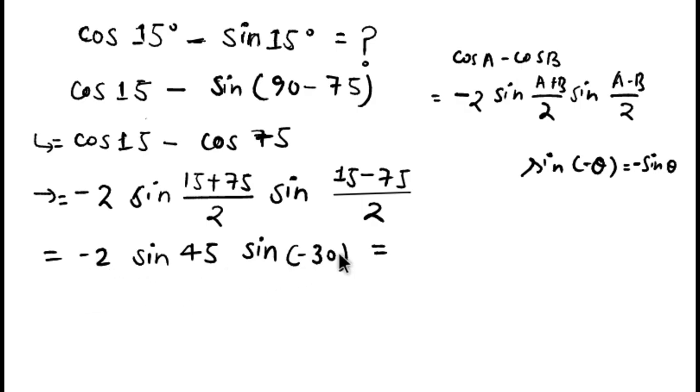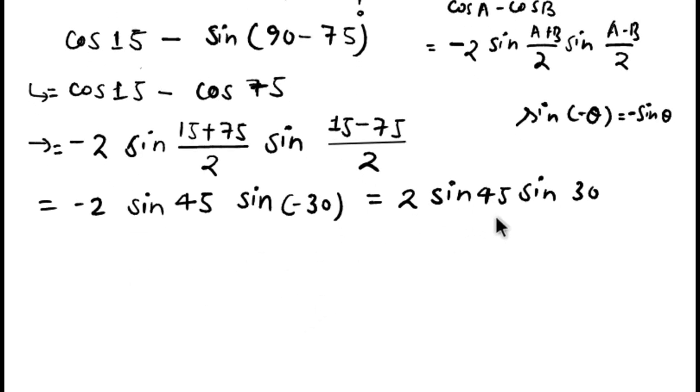Now we put the value of sin 45° and sin 30°. We can easily know from the angle chart the values for 30°, 45°, 60°, 90°. Put the value and we have the result: sin 45° is 1/√2 and sin 30° is 1/2.